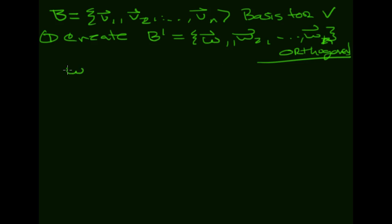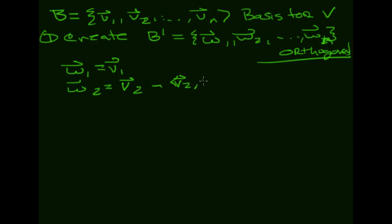The first step: just let W1 equal V1 — that's a good starting point. Then W2 is going to equal V2 minus the inner product of V2 with W1 over ⟨W1, W1⟩, times W1. The argument is that if you take the inner product of this W2 with W1, it's going to come up as 0.